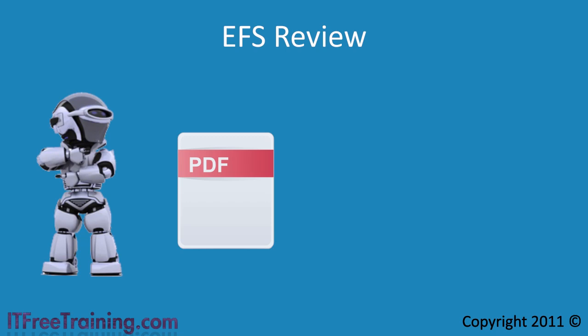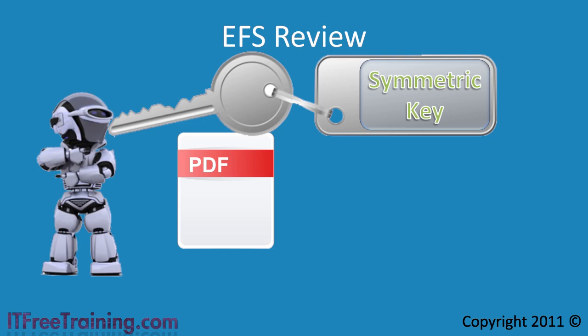First, you have a user on a system that wants to encrypt a file. When the file is encrypted, a symmetric key is used. A symmetric key means the same key is used to encrypt the file as to decrypt it. Symmetric key encryption is used because it is quite fast. The symmetric key is then stored with the file, but the problem is anyone who can access the file could read it.